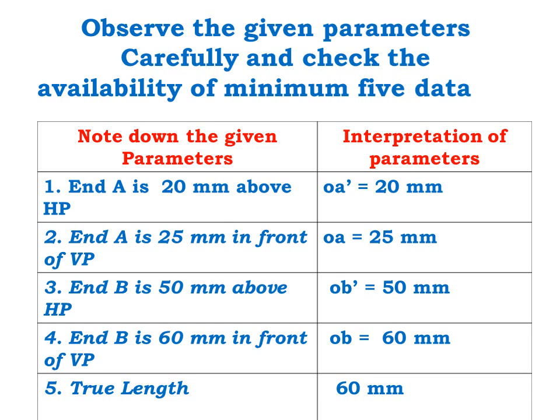End A is 20mm above HP, i.e. oa' is 20mm. End A is 25mm in front of VP, i.e. oa is 25mm. End B is 50mm above HP, i.e. ob' is 50mm. End B is 60mm in front of VP, i.e. ob is 60mm. True length is given as 60mm.